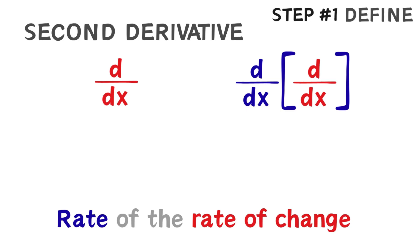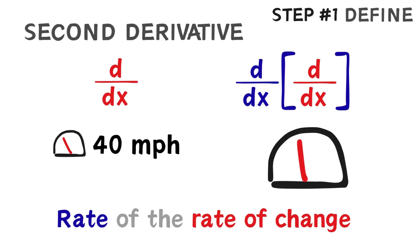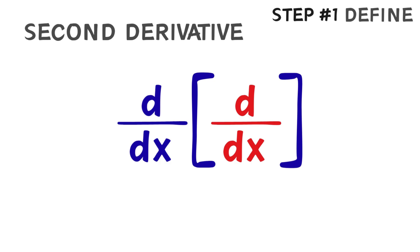Imagine driving. If the first derivative tells you your current speed, the second derivative tells you the acceleration, or how fast your speed is changing. Now, before we get into an example, let's talk about notation.